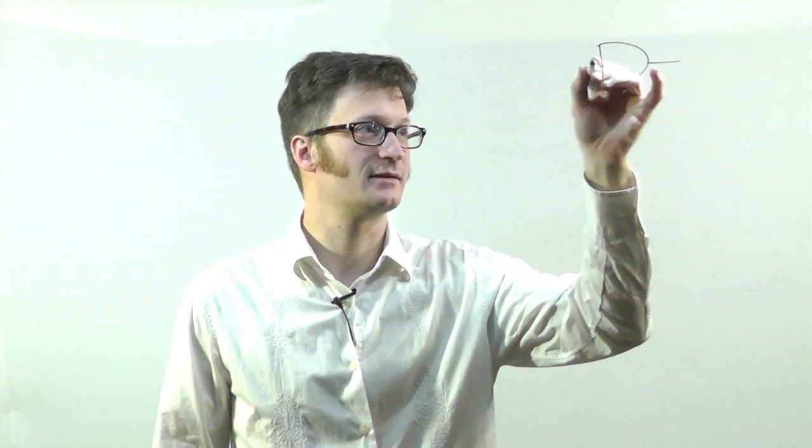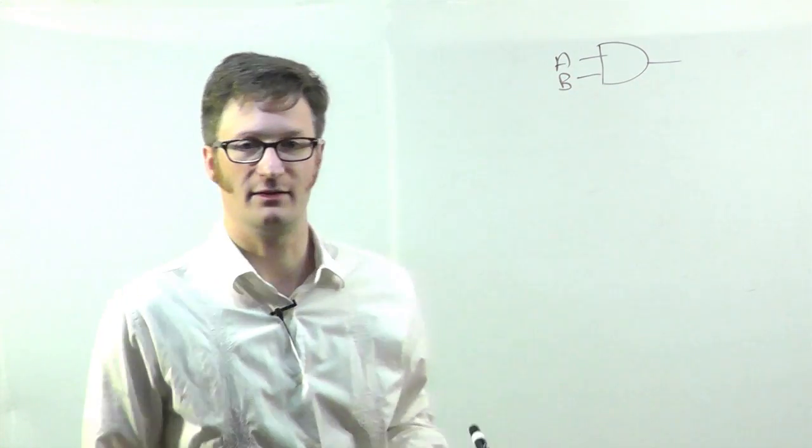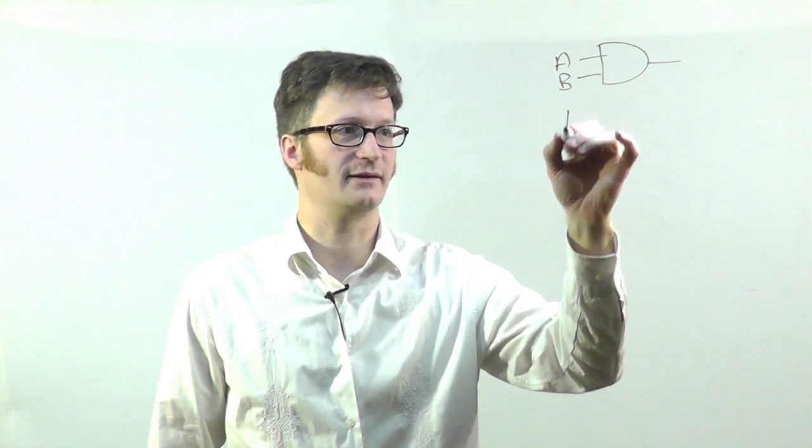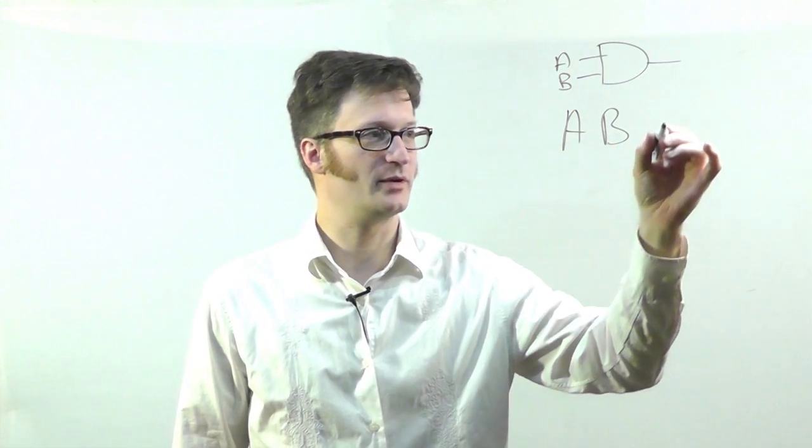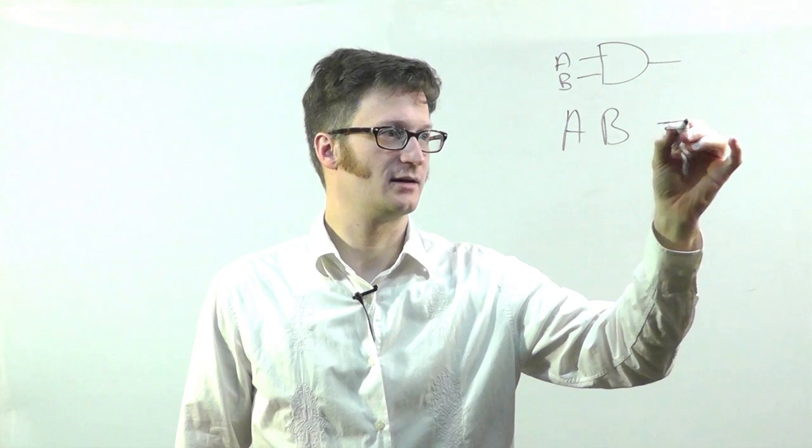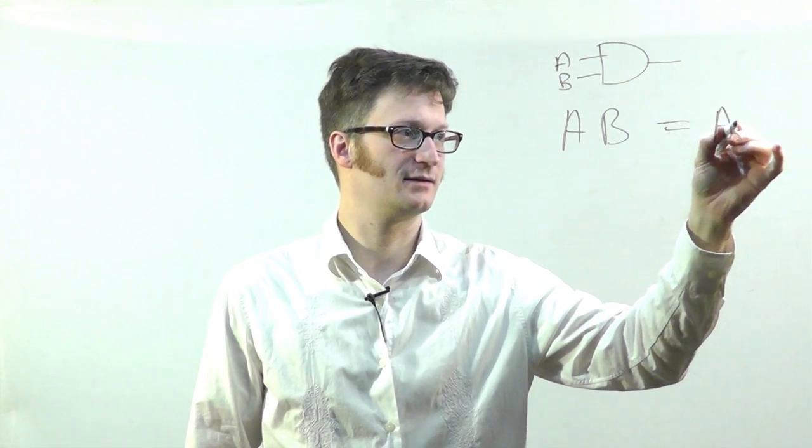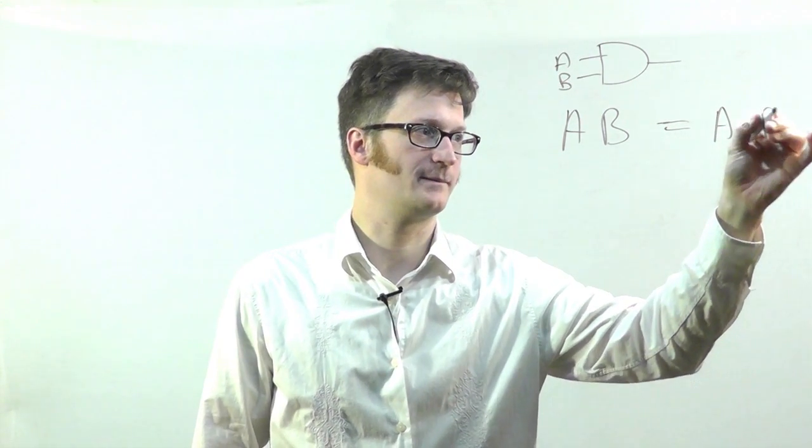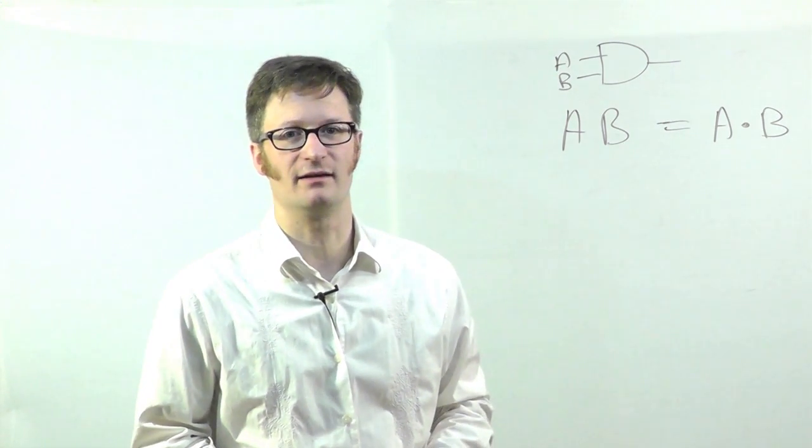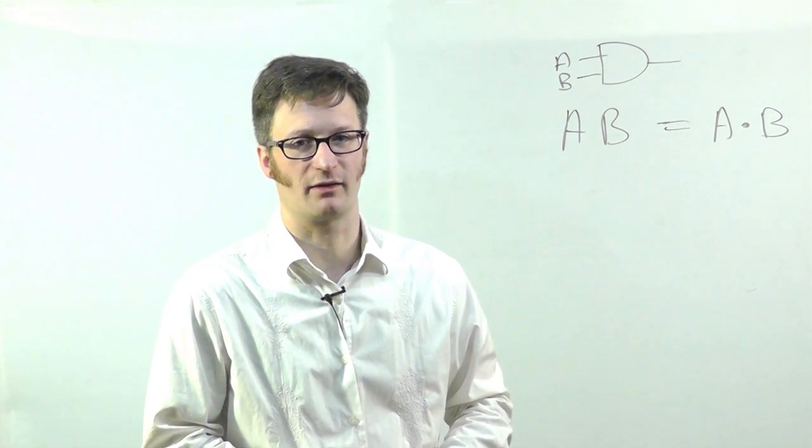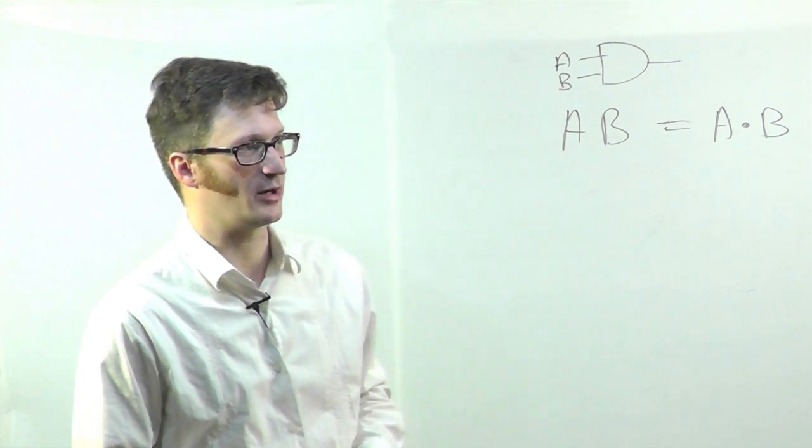So let's start with the AND gate. The AND gate is drawn like this, and the Boolean algebra equivalent is AB, or it could also be drawn as A dot B. The AND is treated like multiply in regular algebra.